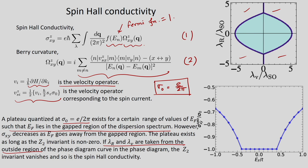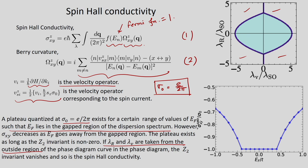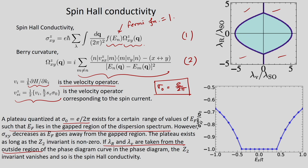These are the helical edge modes shown earlier. Points P, Q, R, S label parameter regions: inside the topological (sky-blue) region is the QSH insulator with helical edge modes; outside is the trivial insulator with no edge modes. This completes the discussion of the Kane-Mele model.